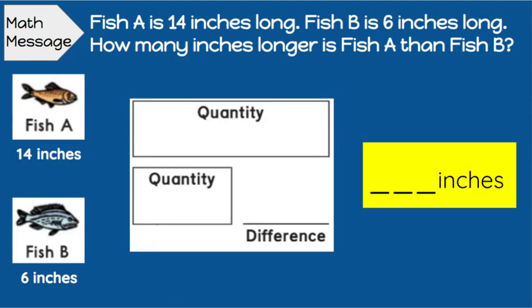So let's do one together. Let's do an example. Fish A is 14 inches long. Fish B is 6 inches long. How many inches longer is fish A than fish B?